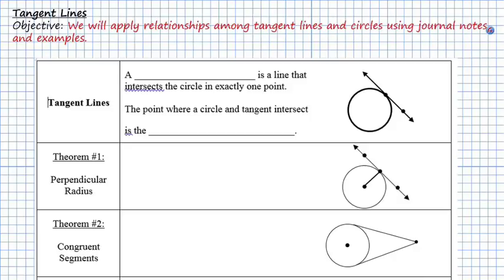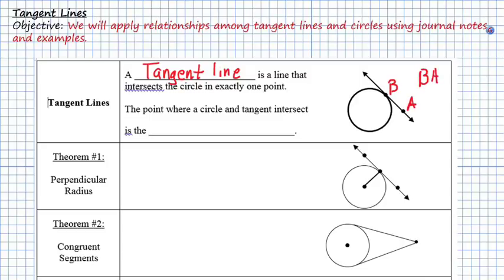So first let's define a tangent line. You guys have seen what this is already because you did your poster. A tangent line is a line that intersects the circle in exactly one point. So if we call this point here B and this point A, then the tangent line is going to be BA or AB.